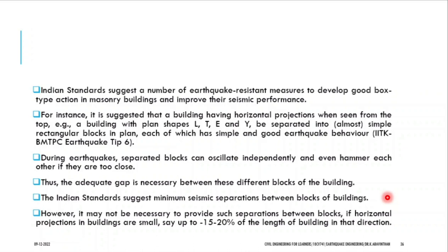PWD guidelines specify what spacing should be between two adjacent buildings and also from the building to the road. The Indian Standard suggests a minimum seismic separation between blocks of a building. If horizontal projection of buildings is small, say up to 20% of the length, at least 15 to 20% separation gap should be there.